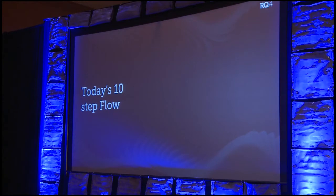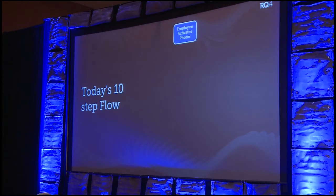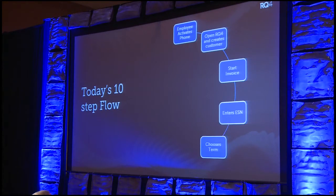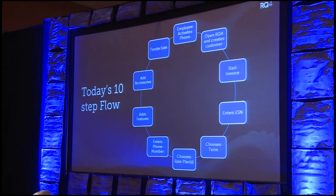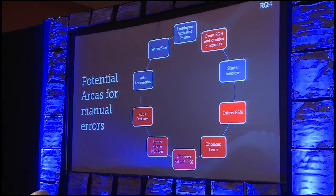If you're not bringing the XML into RQ4, here's what your flow looks like today: 10 different steps for the employee to get from the carrier's activation site into a finished RQ4 sale. You activate a phone, open RQ4, create your customer, start your invoice, scan in your ESN, choose your term, choose your rate plan, enter the phone number, add features, add accessories, and tender your sale. Of those 10 steps, employees can potentially enter the wrong phone number, wrong ESN, wrong features, or wrong rate plan.